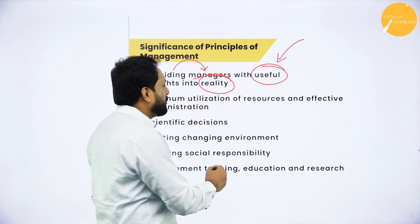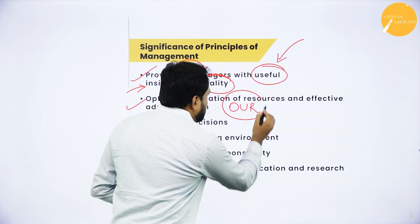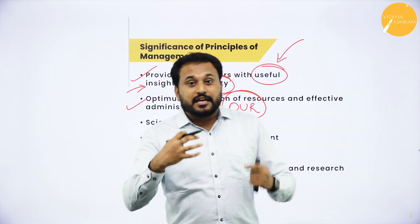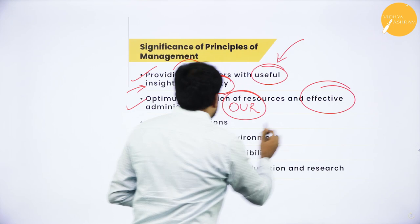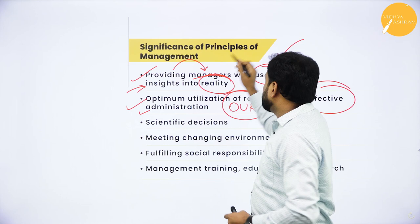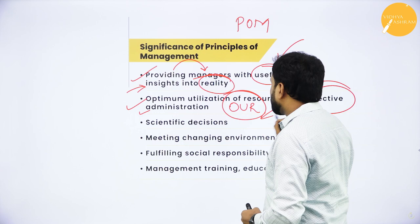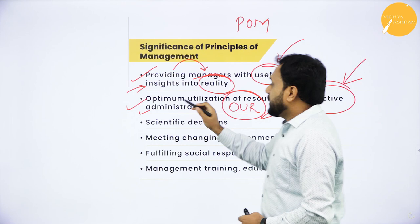The second significance is optimum utilization of resources. If employees feel that the resources are 'ours' and they utilize it properly, then there will definitely be effective administration. Through Principles of Management you can achieve scientific decision-making and effective administration.